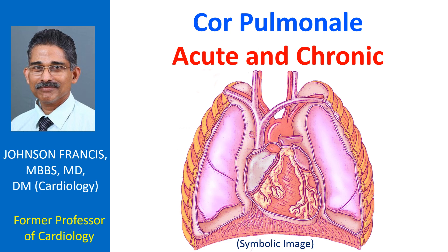In simple terms, cor pulmonale is heart disease secondary to lung disease which causes pulmonary hypertension. It is associated with right ventricular hypertrophy and heart dilatation which eventually leads to right heart failure.